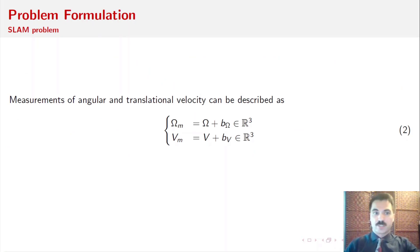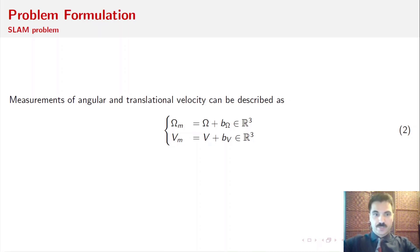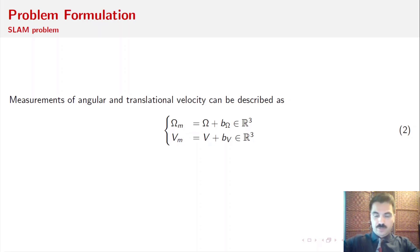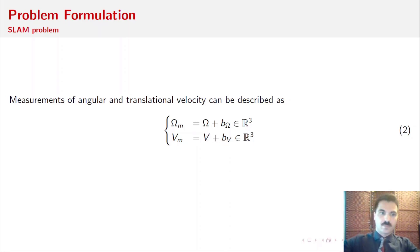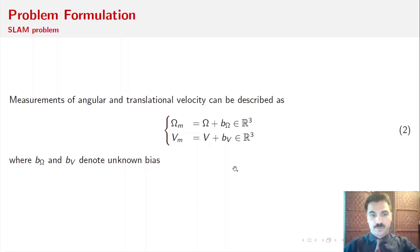Equation 2 represents the measurements of the rigid body's angular velocity and the rigid body's translational velocity. Omega-M refers to the angular velocity measurement, which is equal to the true value of the angular velocity plus some uncertainty B-omega, also known as the bias of angular velocity. V-M is equal to the translational velocity plus some uncertainty B-V. B-omega and B-V denote unknown bias or uncertainties.